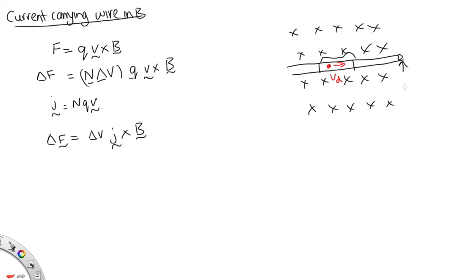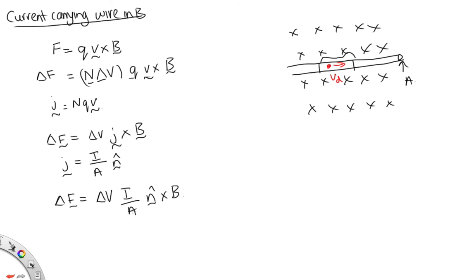Considering the wire has cross-sectional area A, current density J = I/A in the direction of current flow. So the force equals ΔV × (I/A) × n × B. The volume over the cross-sectional area equals the length of the wire section. Making the length a vector in the direction of current flow, we get ΔF = I L × B. This gives us the force on a section of wire in a magnetic field.